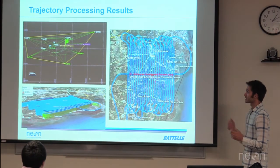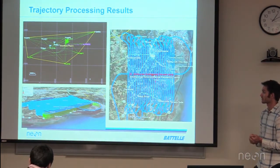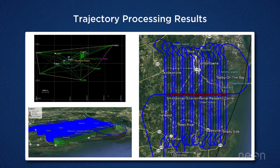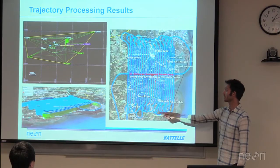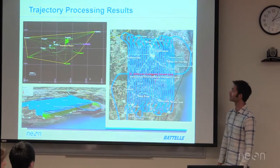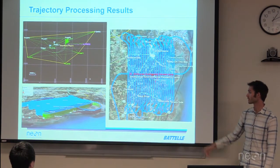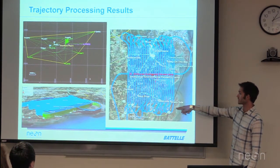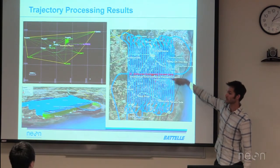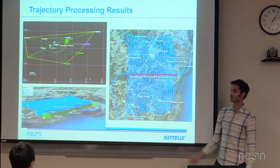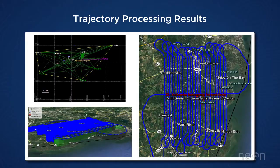Here is an example of trajectory results from Smithsonian Environmental Research Center. On the upper left you can see the software used to process the trajectory, and then the resulting trajectory in Google Earth, where you can see each one of the flight lines flying up and down across the site.